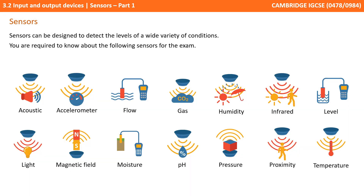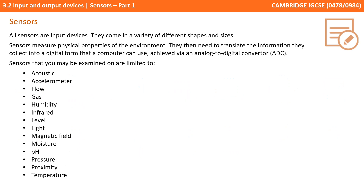Sensors can be designed to detect a wide variety of levels and different conditions. On the screen now are the 14 sensors that you're required to know about for your exam. We're going to go through these in more detail in part two. For now, pause the video and take some notes on what you've learned so far.